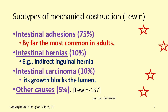By far the most common type of mechanical obstruction is caused by intestinal adhesions — not inside the intestine, but scar tissue that develops between adjacent intestines, usually following surgery. They can cause the intestines to get tangled up upon one another and compressed, creating a mechanical obstruction. Intestinal hernias are another cause — just like hiatal hernias, you can get one through the wall of the intestine. Intestinal carcinoma can also occur.